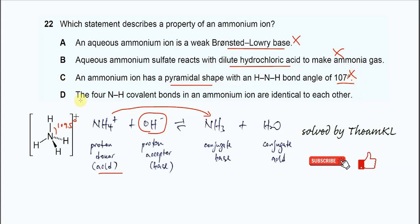Option D: The four N-H covalent bonds in an ammonium ion are identical to each other. Even though there is a dative bond, all the bonding here are covalent bonds. So therefore D is the best answer.